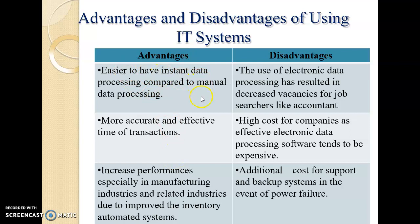The advantages and disadvantages of using an information technology system: the advantage is that you can have instant data processing compared to manual data processing. However, a disadvantage is that the use of electronic data processing has resulted in decreased frequency of jobs such as accountants, because nowadays many organizations use data processing which can make all transactions easier without requiring as much personnel.